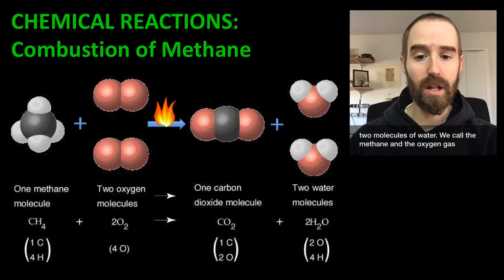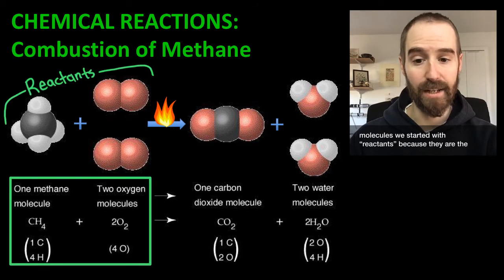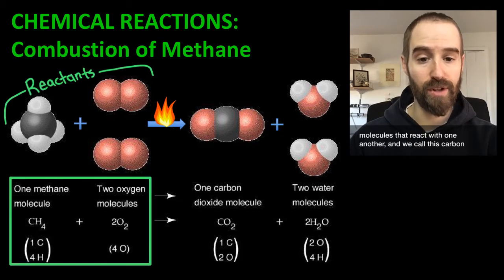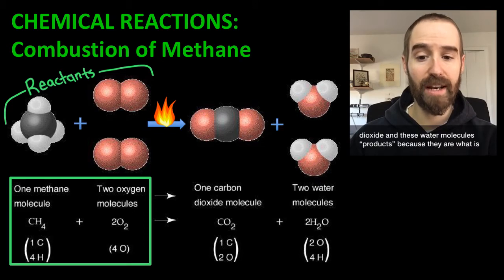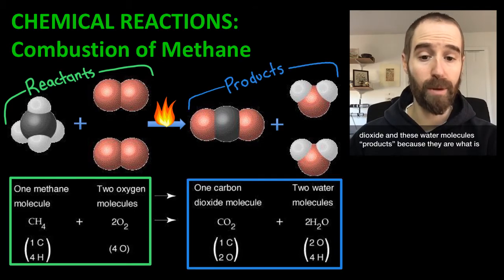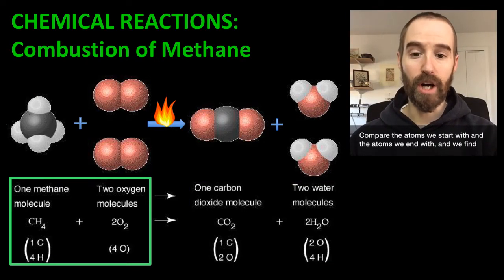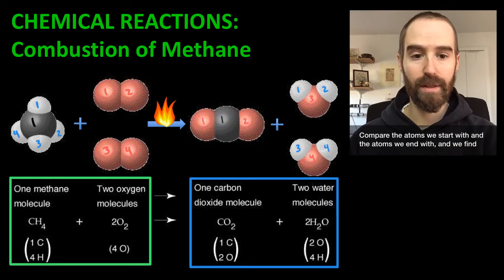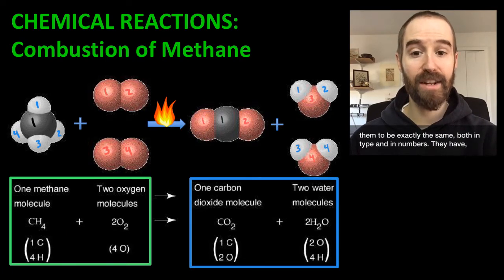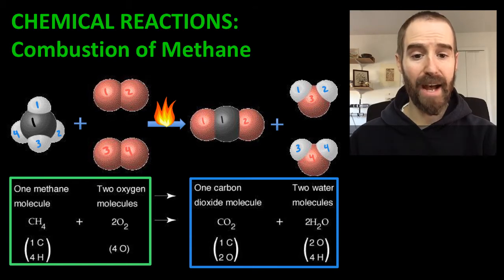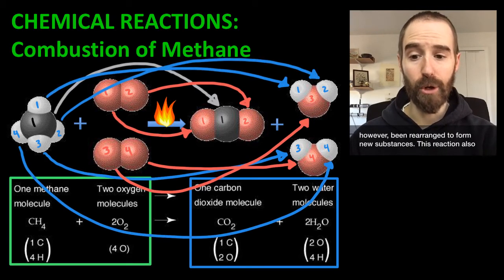We call the methane and the oxygen gas molecules we started with reactants, because they are the molecules that react with one another. And we call this carbon dioxide and these water molecules products, because they are what is produced during this reaction. Compare the atoms we start with and the atoms we end with, and we find them to be exactly the same — both in type and in numbers. They have, however, been rearranged to form new substances.